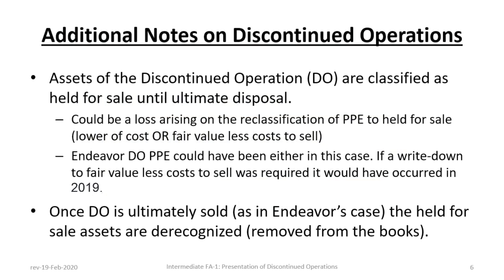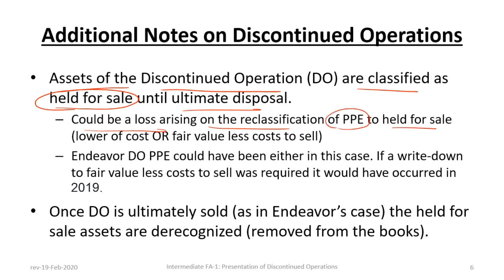Recall from Tutorial 1 that the assets of the Discontinued Operation are classified as held for sale until ultimate disposal. Once that classification is made, there could be a loss arising on the reclassification of property, plant, and equipment to held for sale, based on the lower of cost or fair value less cost to sell. The Endeavour Discontinued Property, Plant, and Equipment could have been reported at either value. We don't know because this example doesn't provide details of what happened when management decided to discontinue the operation. If a write-down to fair value less cost to sell was required, that write-down would have occurred in 2019. Once the DO is ultimately sold, the held for sale assets are de-recognized — removed from the books.